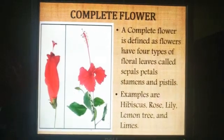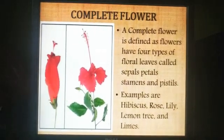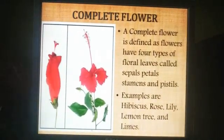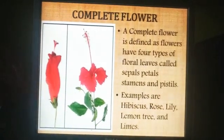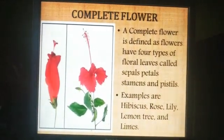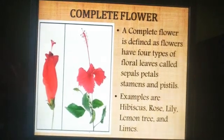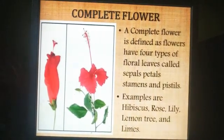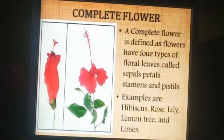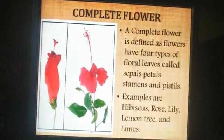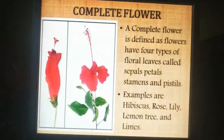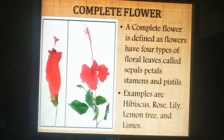The first important term is the complete flower. A typical flower consists of four types of floral leaves called sepals, petals, stamens, and carpels. A flower in which all four whorls are present is called a complete flower. Examples of complete flowers are hibiscus, rose, lily, lemon, and lime.